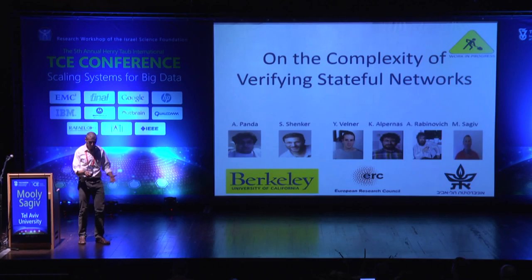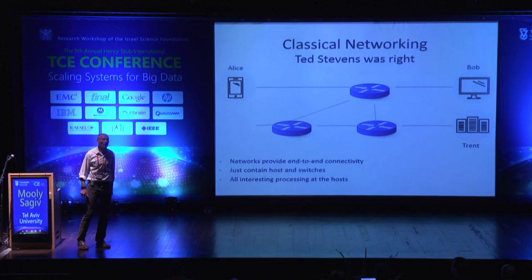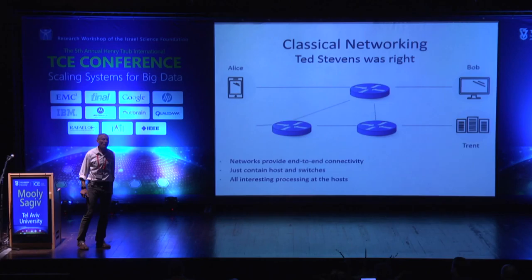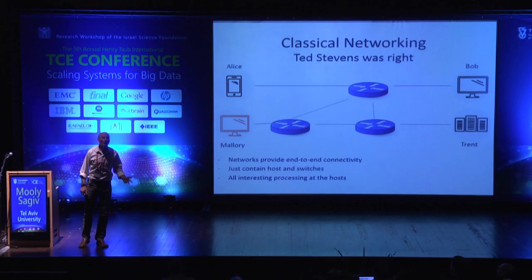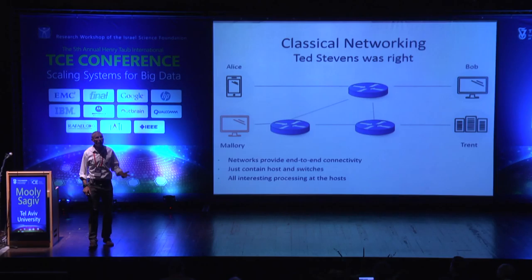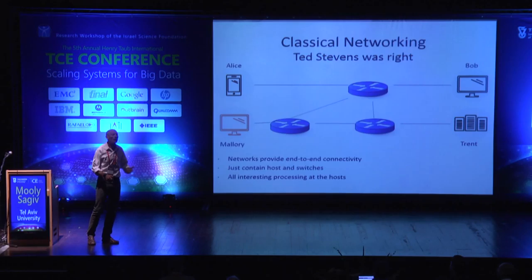This is an attempt to apply formal methods to formally verify that your network is correct. When you think of networking, you think about routing, and you think that the only thing you have to care about in a network is correct routing. But in fact, the reality is far more complex. There are bad things in the internet and bad people using it, so you have to worry about security.